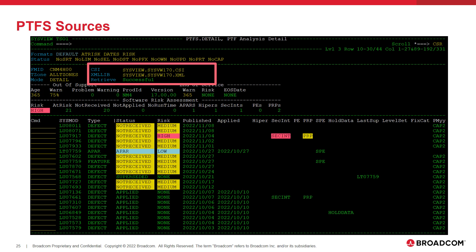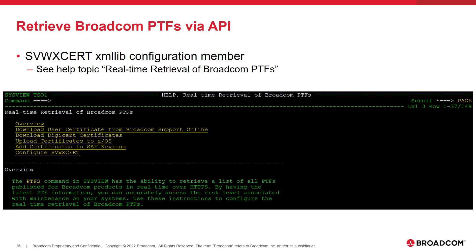In the section of the information area outlined on the PTFs command, the source of the sysmods are displayed. Here we can see the CSI that was queried, indicated by the CSI field; the dataset containing the product XML tracking elements, indicated by the XMLLib field; and the status of the API call, indicated by the Retrieve field. For Broadcom products, an API can be called over HTTPS to retrieve a list of available maintenance in real-time. By configuring this API, even sysmods that are not received on Sherman's systems will be displayed by the PTFs command. See the help topic titled Real-time Retrieval of Broadcom PTFs for detailed information on how to configure this API.